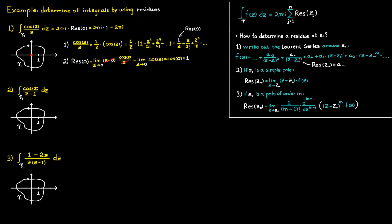In our next example, we have a simple pole at c equals 1. Applying Cauchy's residue theorem, we use the second method to determine the residue at c equals 1. Writing out the formula, we notice two factors that are the same and cancel each other out. Taking the limit as c approaches 1, we get cosine of 1, which is our residue at c equals 1. Inserting this result, the integral equals 2πi times cosine of 1.